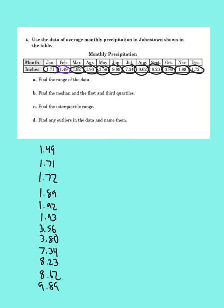So A says to find the range of the data. Remember, range is big minus little. So the biggest number is 9.89 minus smallest number is 1.49. And if we do that, we get a range of 8.4 inches. So that's part A.